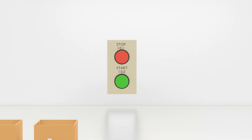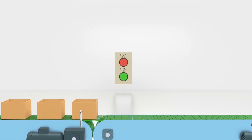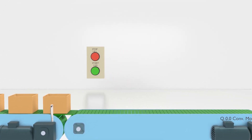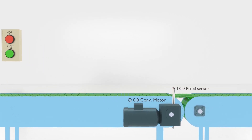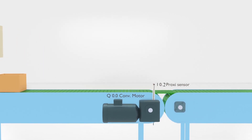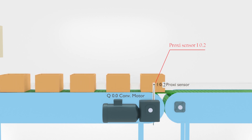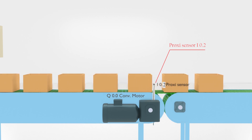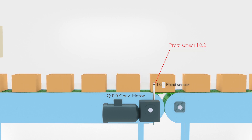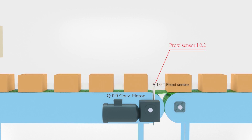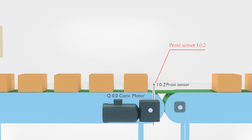For today's session we have a start push button I0.0 and a stop push button I0.1. When we press the start push button I0.0 it will start the conveyor Q0.0 and boxes will start to travel on the conveyor. We also have a proxy sensor I0.2 to detect the boxes. The PLC should count the boxes, and after five boxes the conveyor should stop, the counter should reset, and be ready for the next cycle.